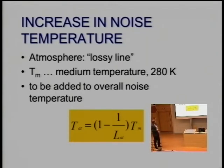So here is the formula: the temperature due to the atmosphere is 1 minus 1 over the loss for the atmosphere times the medium temperature, this is approximately 280 Kelvin.